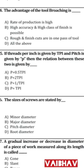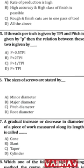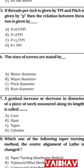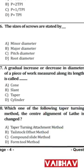Question 35: Threads per inch (TPI) is given by P. The relation between TPI and pitch is: pitch equals 1 divided by TPI — the answer is C. Question 36: The size of screws are stated by major diameter — answer is B.